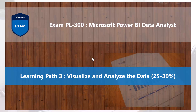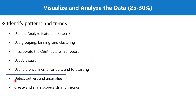Bismillah rahman rahim. Hello everyone, welcome back to the PL300 exam preparation series where we are having a look at the third learning path: Visualize and Analyze the Data. In this video, we are going to discuss the topic 'Detect Outliers and Anomalies', which is part of the section 'Identify Patterns and Trends'.